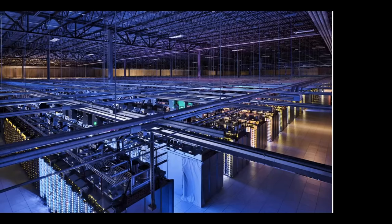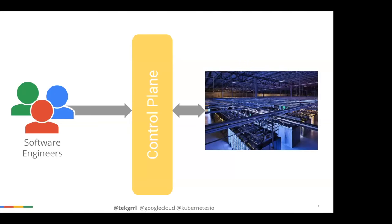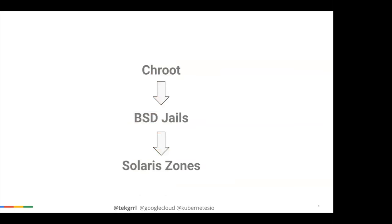What we wanted ultimately was to make it very simple for software engineers to access all of that infrastructure — stick a simple control plane in front of it and have software engineers deploy stuff to the control plane, which would take care of all of the details. Containerization had been kicking off — there was chroot initially, BSD jails, Solaris zones which were popular around 2004. Hypervisors and virtualization with VMs were already there, but the full story for containers wasn't really there yet.